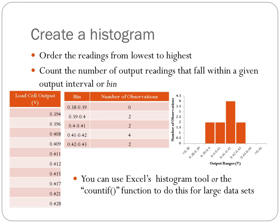Then I'm simply going to go through my list and count the number of times I get an output voltage from my load cell that falls within a given bin range. Here from the table, we see that no measurements fall between 0.38 and 0.39 volts, and we have two measurements that fall within the range of 0.39 to 0.4 volts. If I do this for all of my bins until I've exhausted the entire range, I come up with a number of observations, which I can then plot as a histogram.